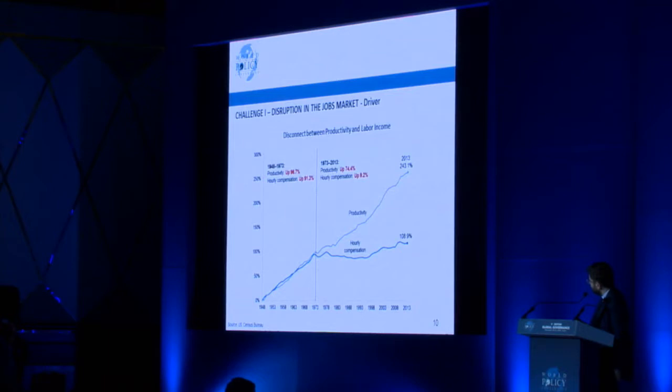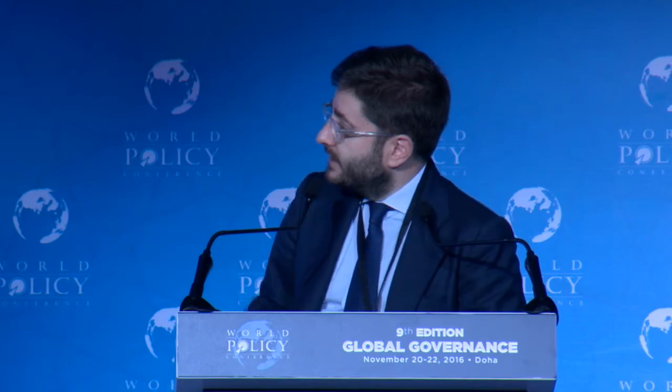This might be the most important graph in the entire presentation. It shows something that has happened from the 1970s onwards — the decoupling of productivity and hourly wages in the U.S. Our entire economic model is based on the assumption that increases in productivity eventually trickle down to wages, feeding into the middle class. From the 1970s onwards, this has ceased to work in the United States: productivity has increased by 243%, while hourly compensation has remained stagnant.